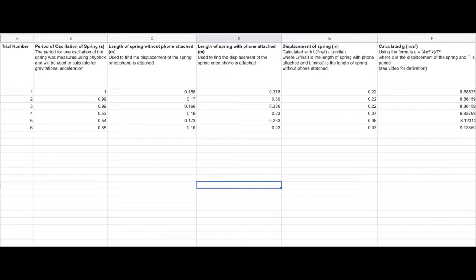The final calculated value for g using the spring method is calculated by taking the average of all of the values of g we found in each trial. We couldn't take the average of the percent errors as well to find the respective final error, so we resorted to using the standard deviation for the final error instead. Our final answer for the gravitational constant g is therefore 8.9 plus or minus 0.6 meters per second squared.